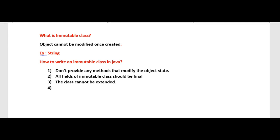The fourth rule is: make all fields private. We should make all the fields of a class private. This prevents clients from obtaining access to the fields of mutable objects and modifying them directly.